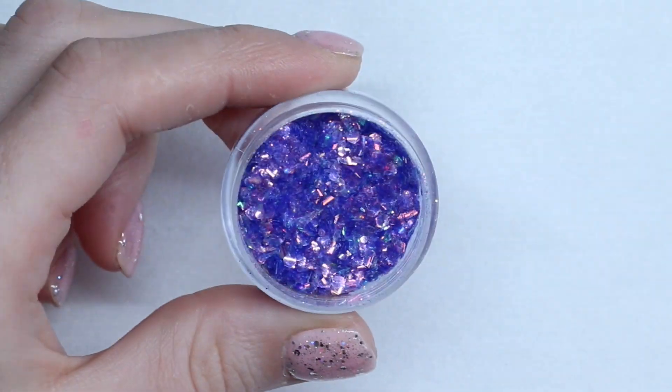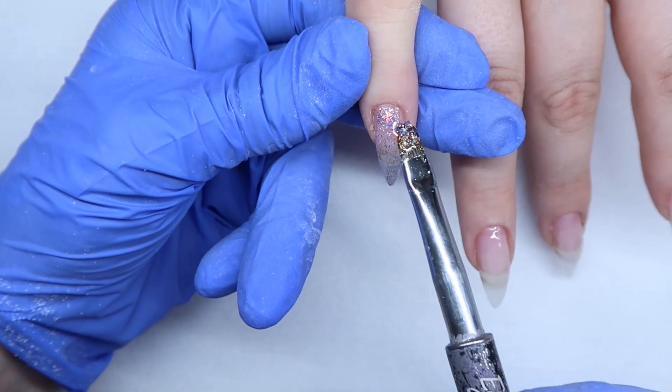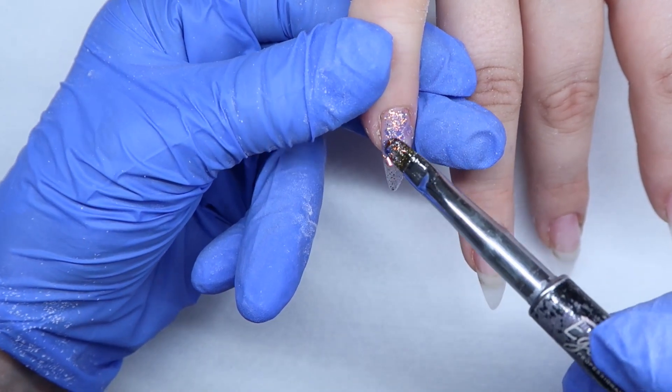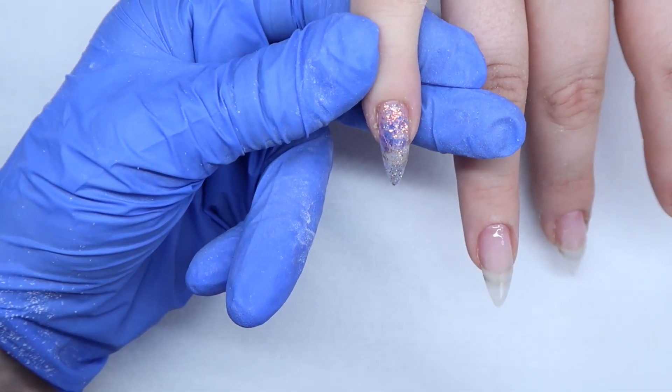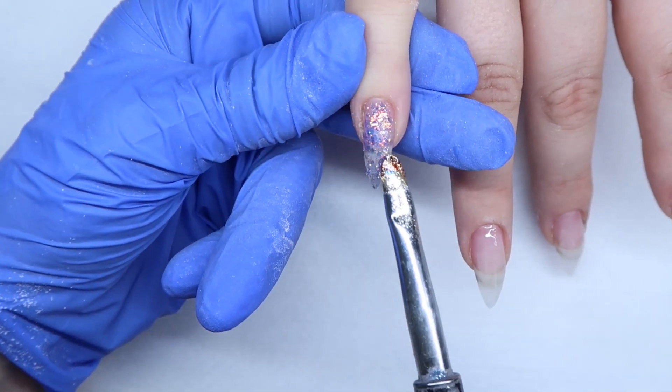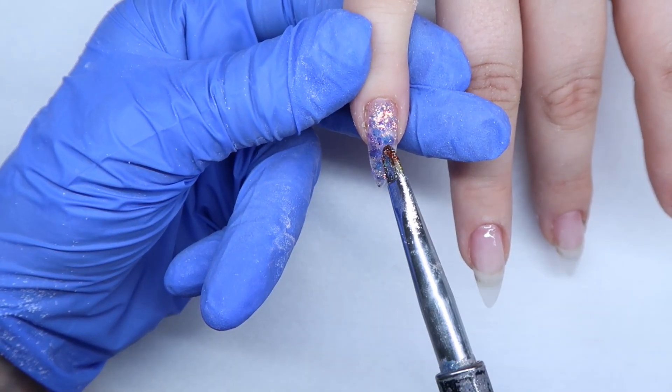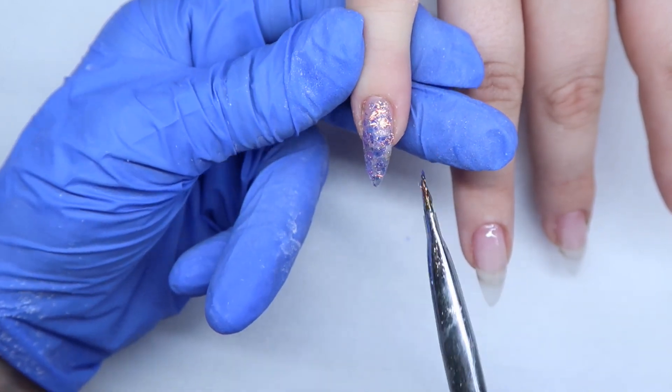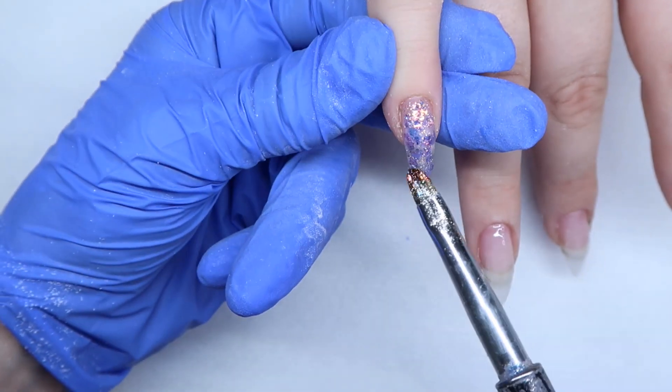So then I'm coming in with these really pretty mermaid flakes. They're from Glitter Heaven Australia and they're called Mermaid Love. So I did not cure that wet gel from Sweet Nothings. I just went right in with the Mermaid Love onto that wet gel. I'm just trying to place them flat enough. It doesn't really matter. This is going to be covered by a stamp anyway. I just wanted a little bit of glitter in there.